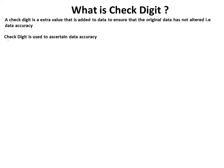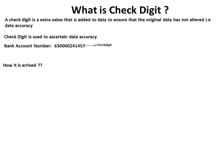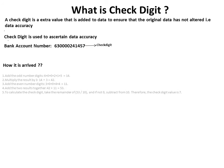Check digit is used to ascertain data accuracy. As an example, consider a 12-digit bank account number where the first 11 digits are the actual account number and the 12th digit — which is 7 — is the check digit. This value is derived from an algorithm applied to the first 11 digits. For the CISA exam, we do not need to remember how the algorithm works; this is just for our understanding.